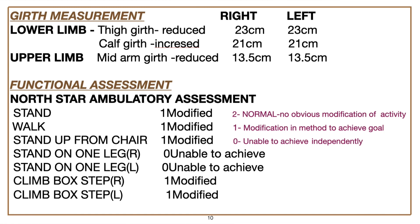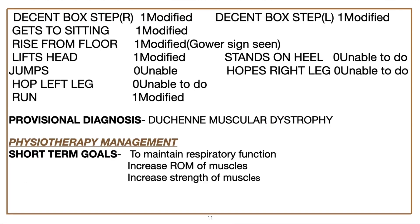As there is atrophy occurring, you have to check the girth — this is really important in DMD patients, and girth will be reduced from normal. For functional assessment, the North Star Ambulatory Assessment Scale is a very good scale to assess the functions of DMD patients. Whenever you are writing a case assessment of DMD, don't forget to write this scale.